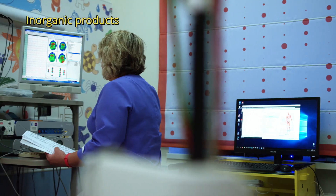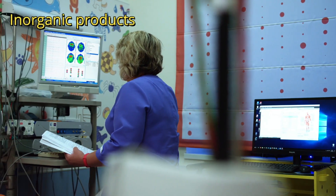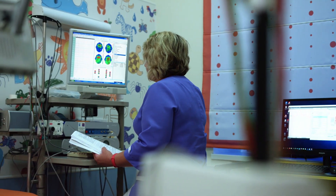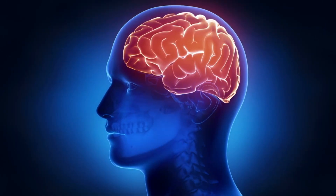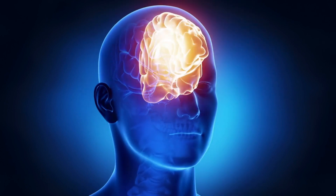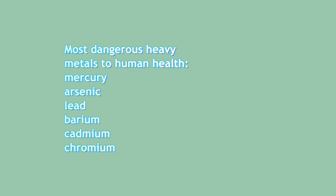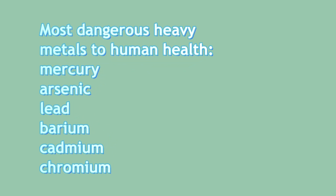Inorganic products such as heavy metals, like lead and arsenic, can accumulate in the body's cells, causing problems such as kidney changes, brain damage, and it is suspected that they can also increase the risk of cancer. The most dangerous heavy metals to human health are mercury, arsenic, lead, barium, cadmium, and chromium.